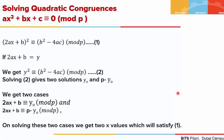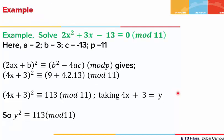Let's look at an example. We solve 2x² + 3x - 13 ≡ 0 mod 11, where a = 2, b = 3, c = -13, and the prime modulus p = 11. Applying our formula, (4x + 3)² ≡ 9 + 4·2·(-13) = 113 mod 11. This is the congruence we have.